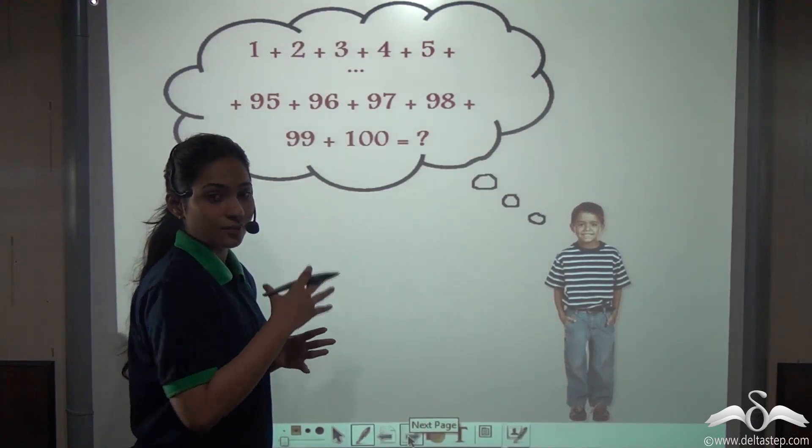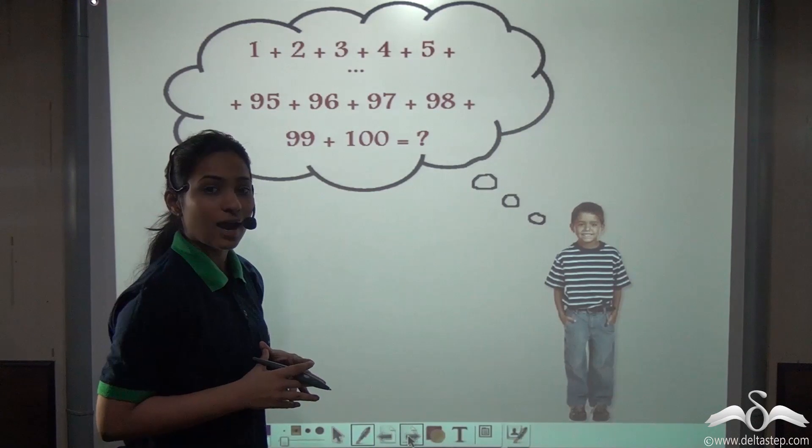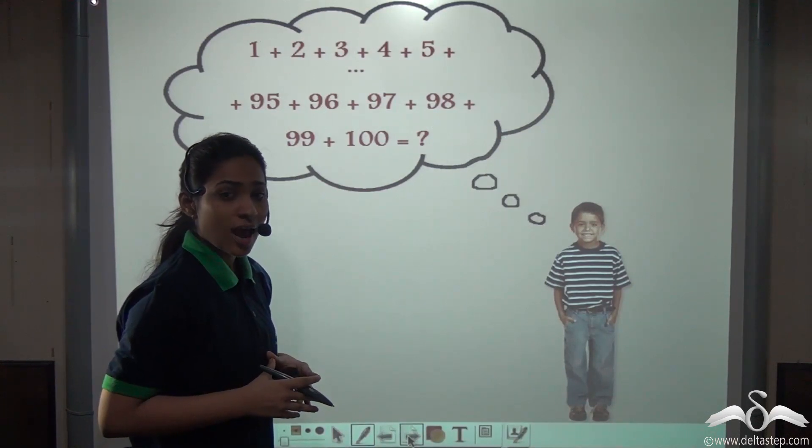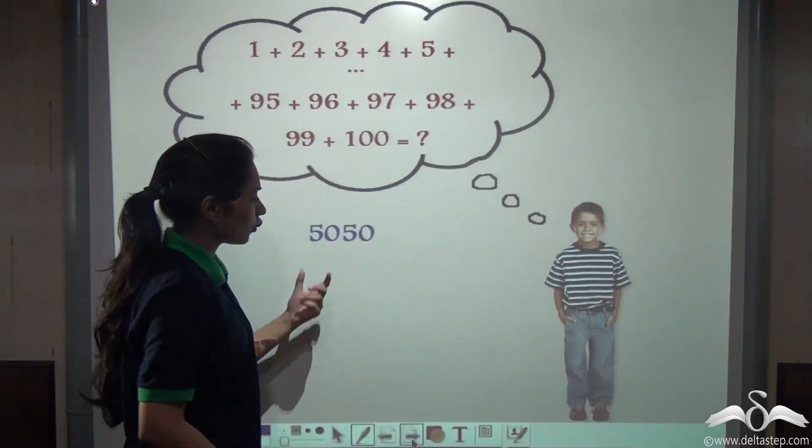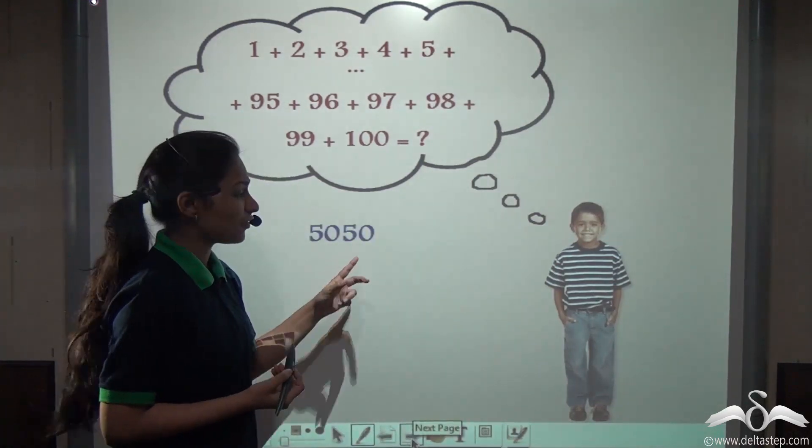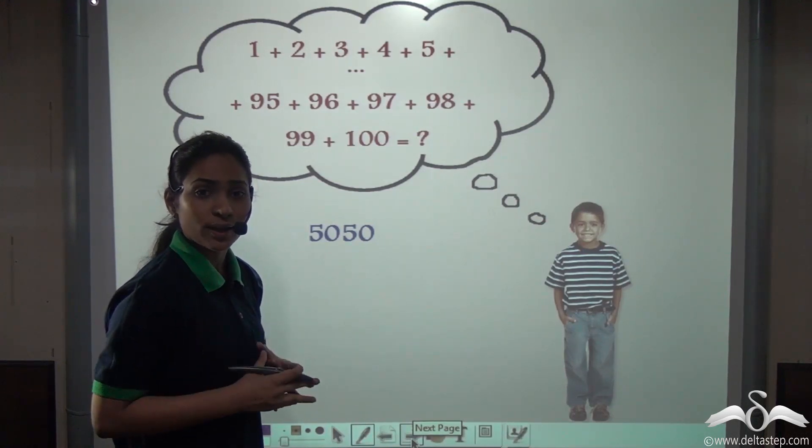The teacher told Karl to go in a corner and find the sum of first hundred numbers. The teacher thought Karl would calculate this and take a lot of time and not disturb the class. But just after a few minutes, the teacher asked him, have you finished? And Karl said yes. He had finished and gave the answer quickly: 5050.